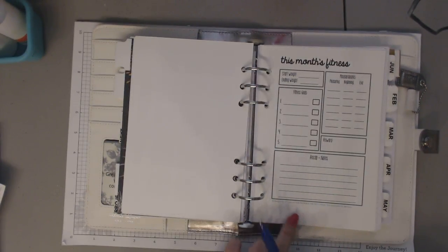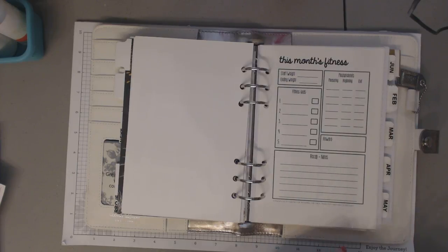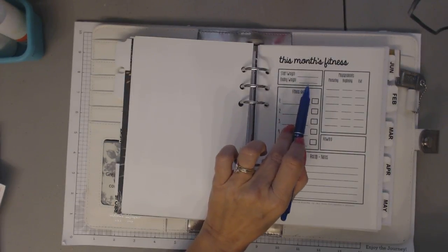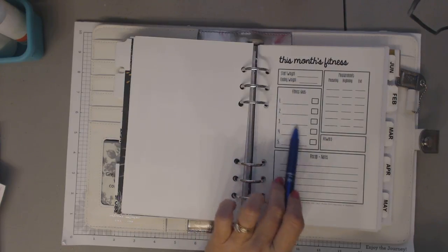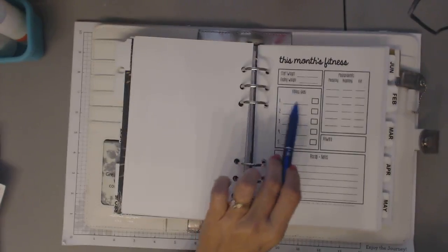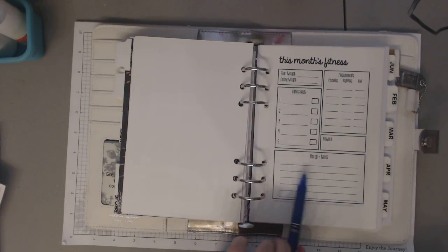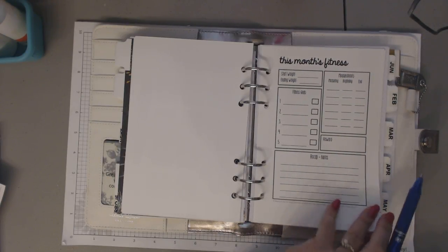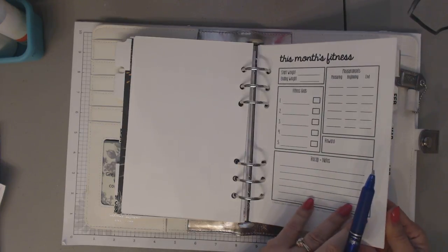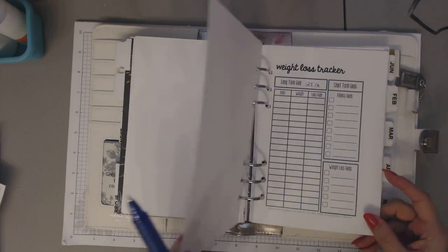This is this month's fitness. This came from a different shop. And I'll link her shop also. Start weight, end weight, my measurements in all the different areas I measure. Fitness goals, which I won't have five each month. But anyway, reward and a recap and notes section. So those are really nice, I think. I think she did a good job planning everything you'd need to keep track of.